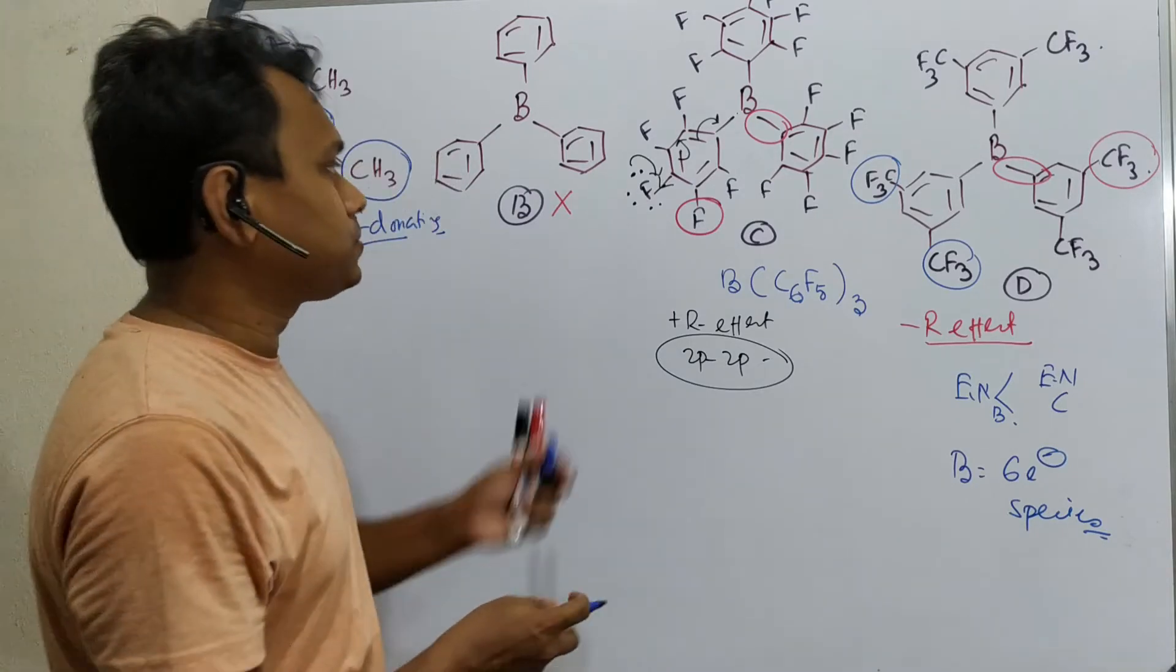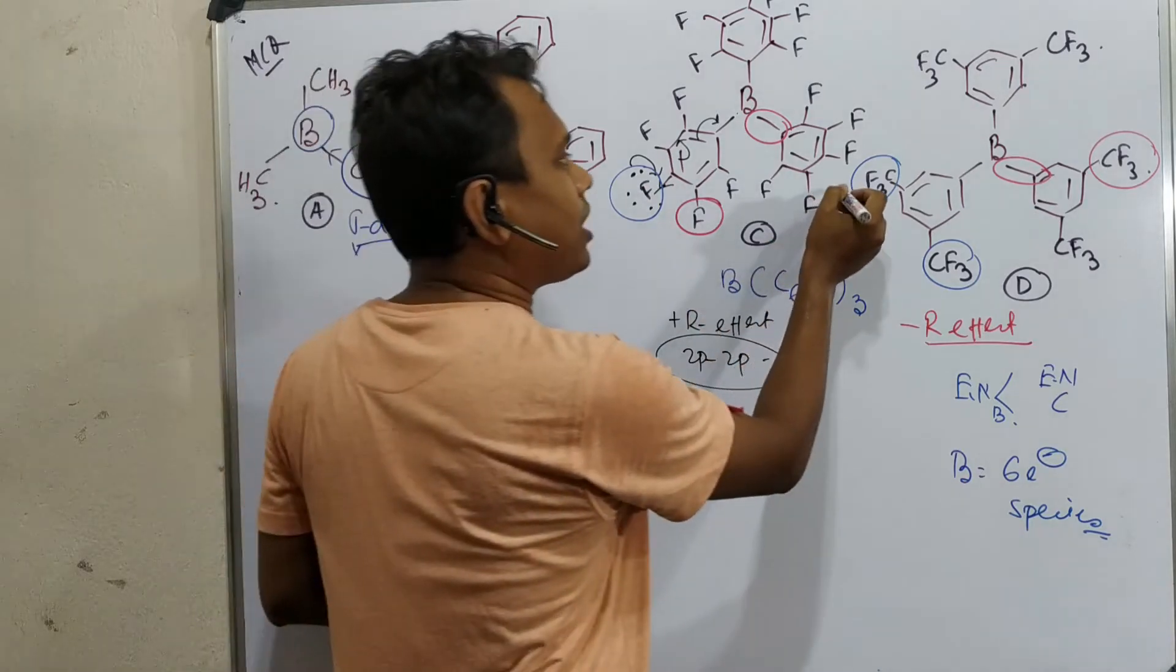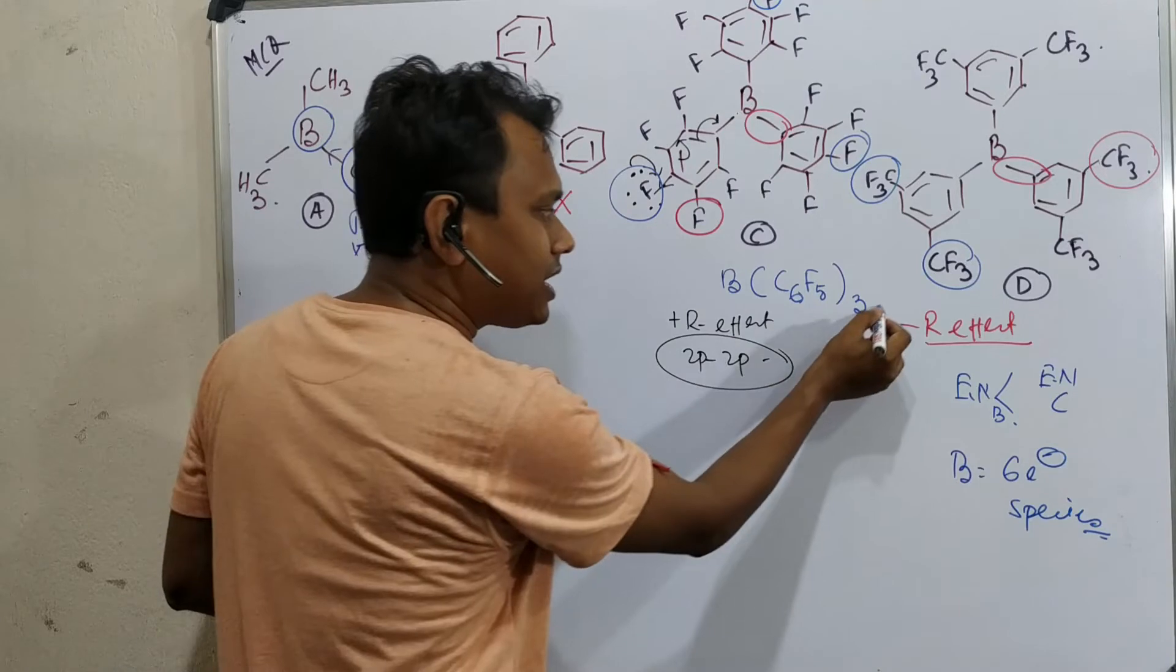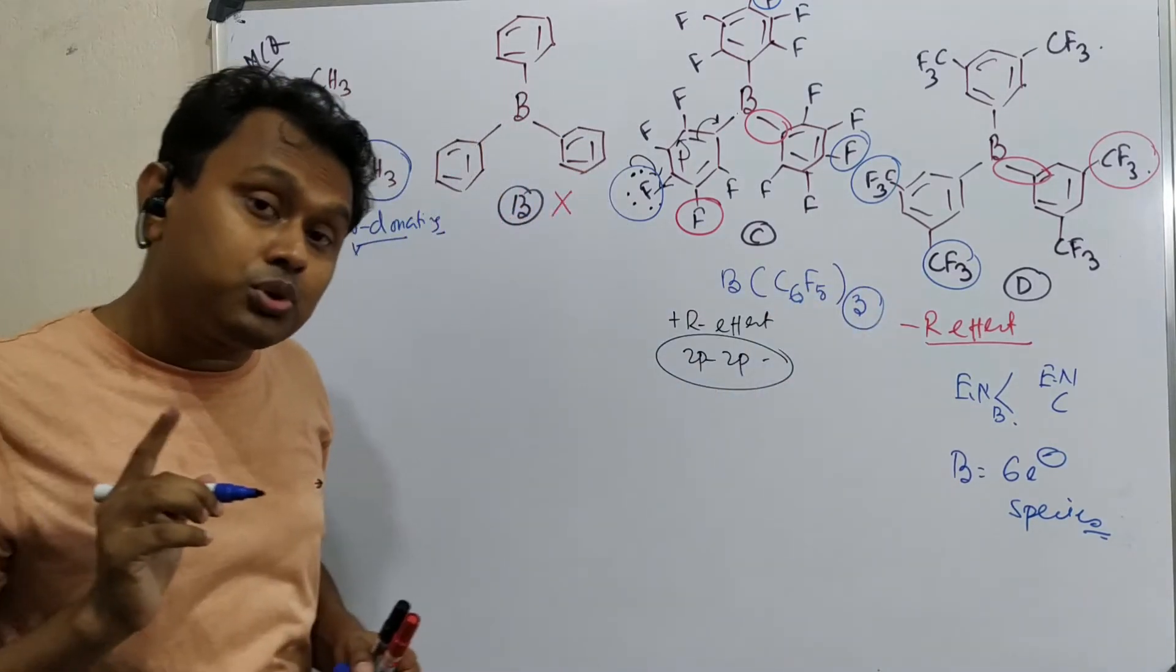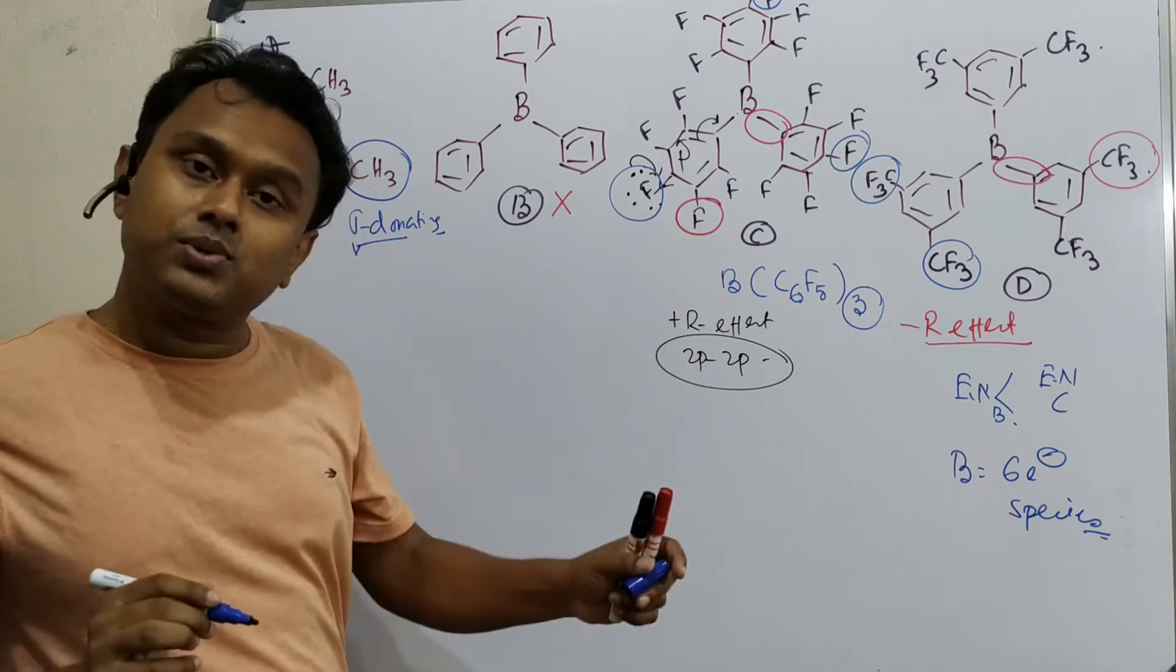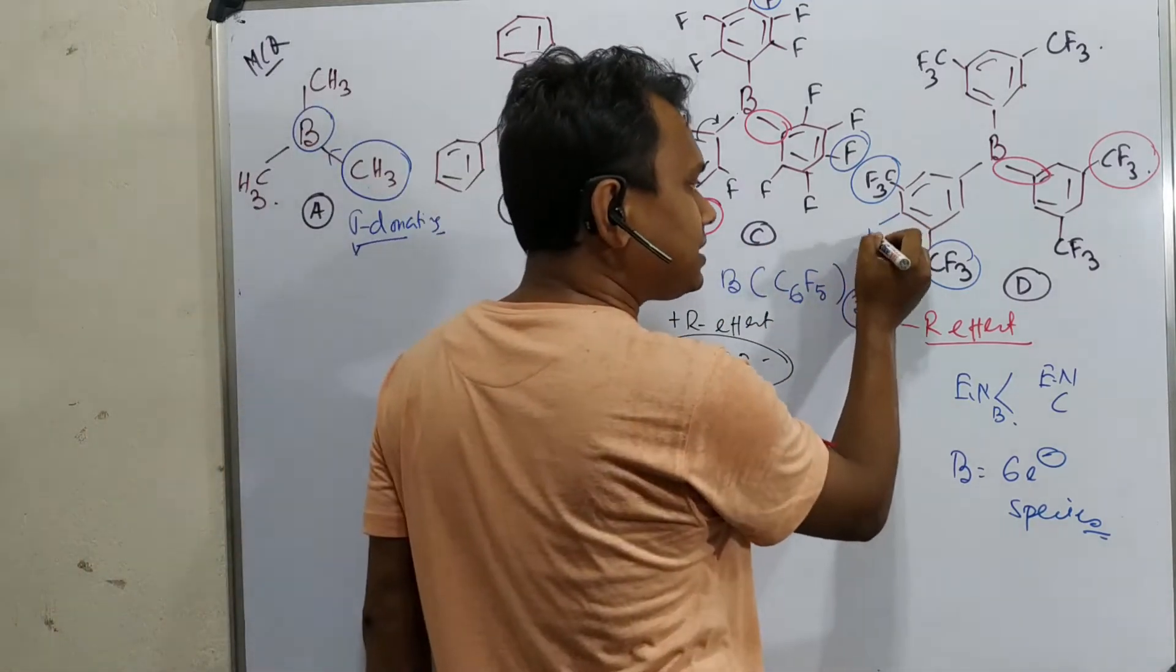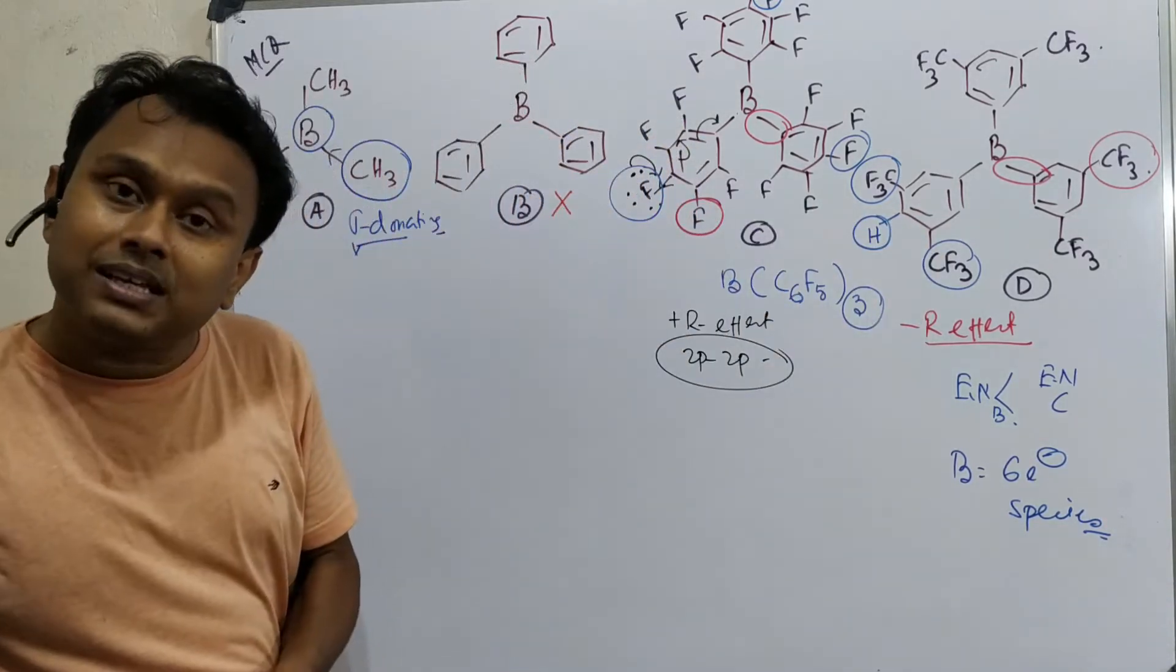Now we can ask one question: fluorine is always withdrawing, why will it donate? Because boron is a six-electron species. If fluorine donates through this type of resonance, fluorine will lose some electron density too, but boron will have an octet, which means the whole system will be stabilized. In option C, three such kinds of stabilization are possible - one because of each para-fluorine. From three angles, stabilization is possible. But in option D, this para-fluorine is absent and hydrogen is there. So in this case, no plus R effect.